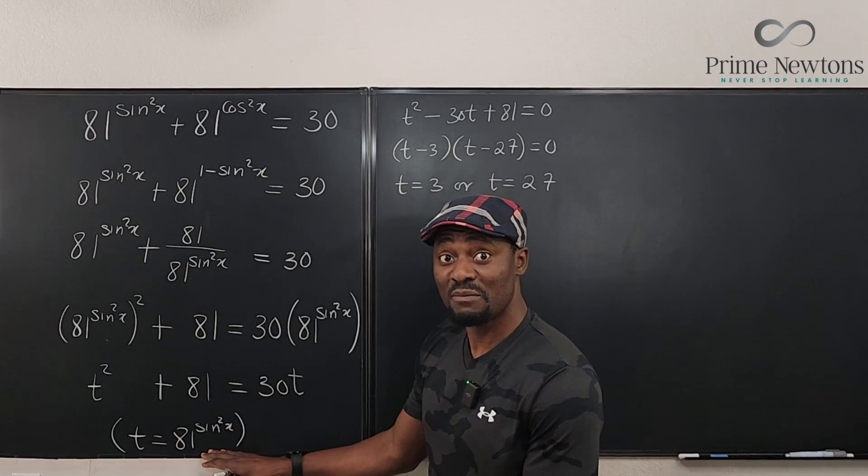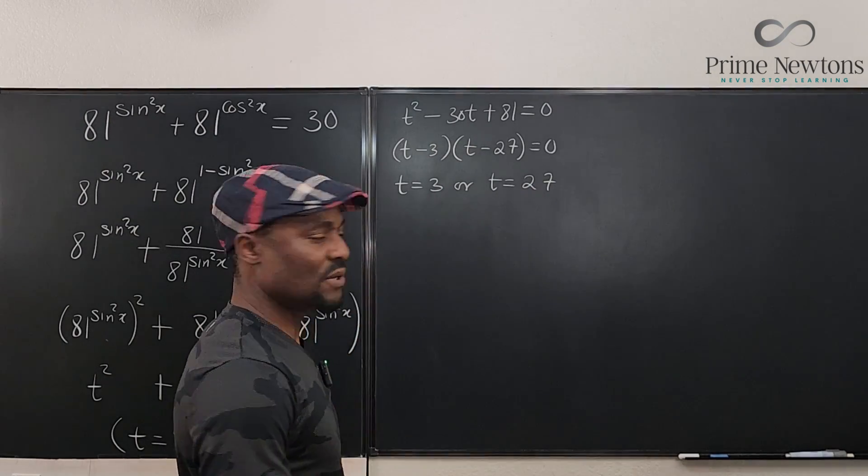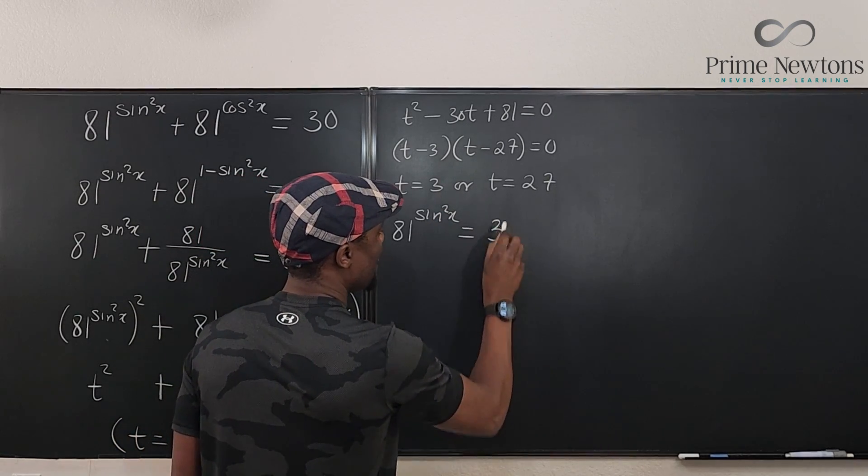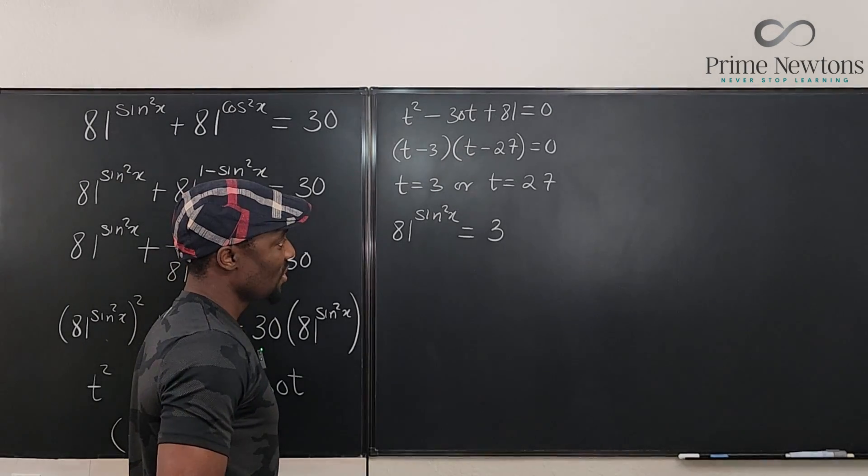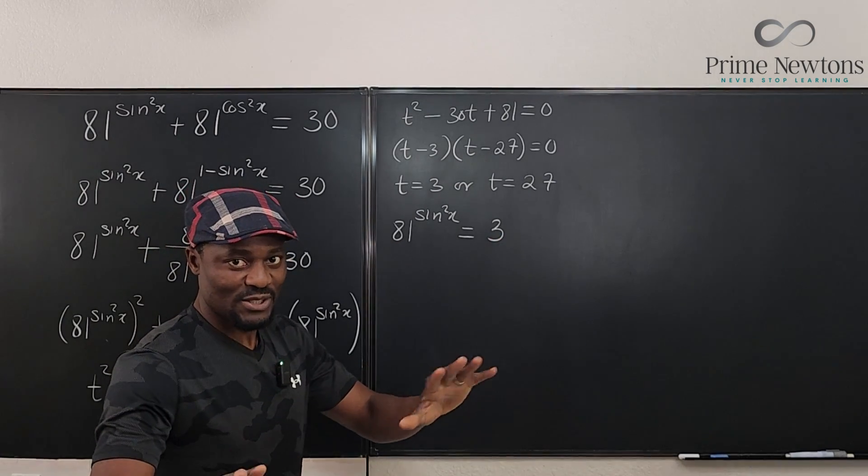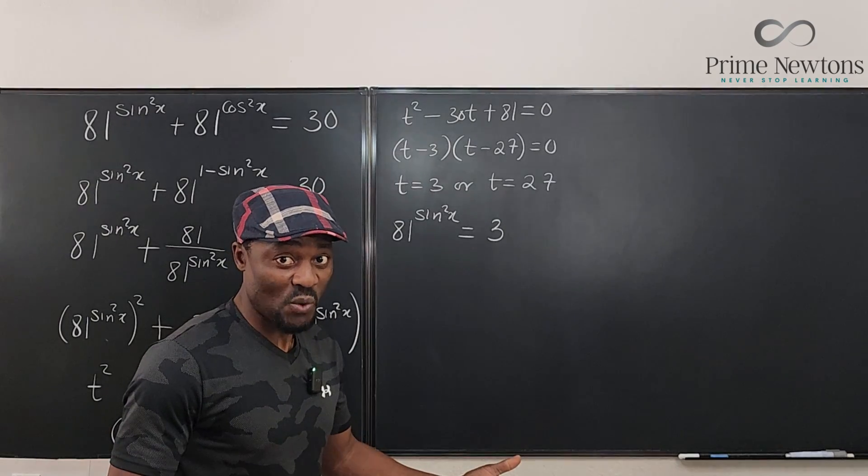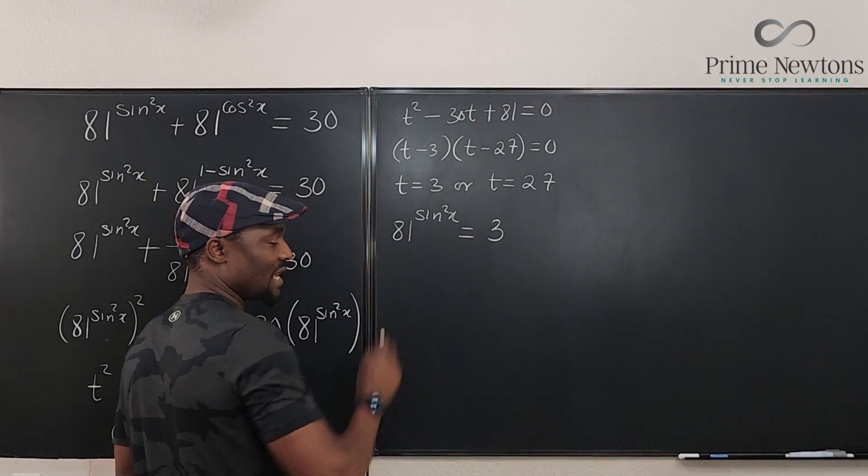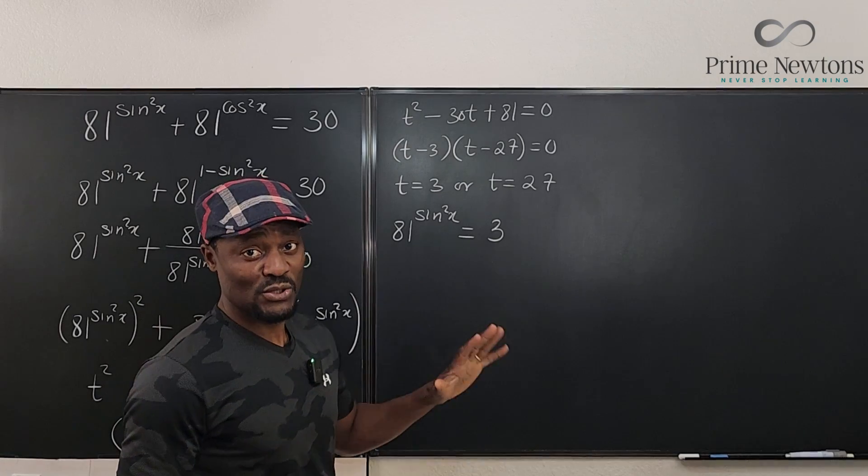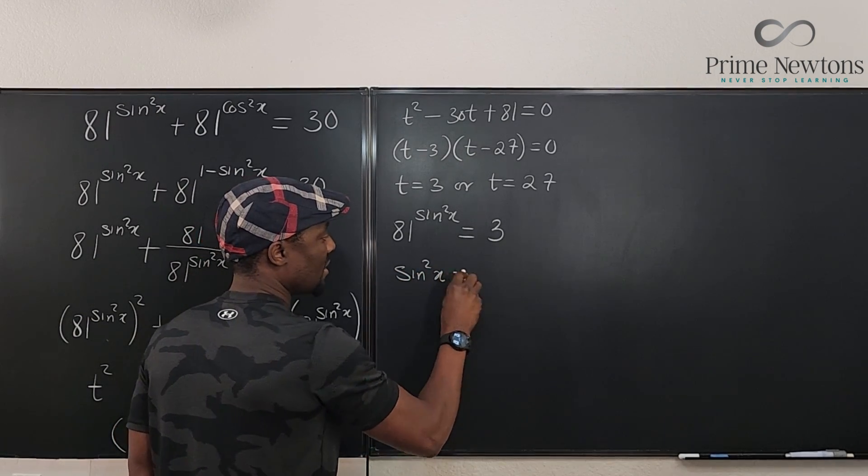So now we can go back to what we claimed at the beginning, saying that 81 raised to power sine squared x is equal to 3 or equals 27. Let's take the first one. So we have 81 raised to power sine squared x is equal to 3. That's the first option. Well, but I know that I can write 81 as 3 to the fourth. What power would you raise 81 to to get 3? It's 1 fourth, right? Just to save time. We know that this has to be 1 fourth. And if you find it hard to deal with, you can take the natural log of both sides or do your exponential equation solution. You get your answer. So I know that this is 1 over 4. So this implies sine squared x is 1 over 4.